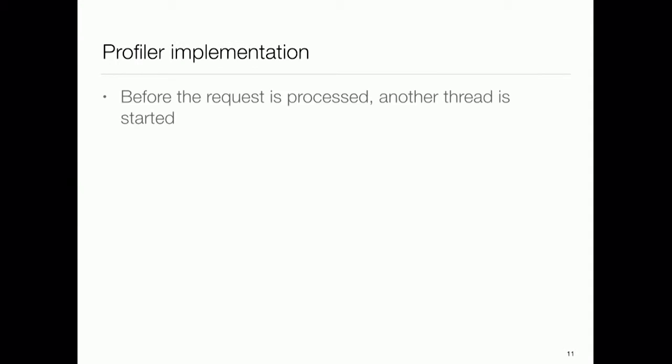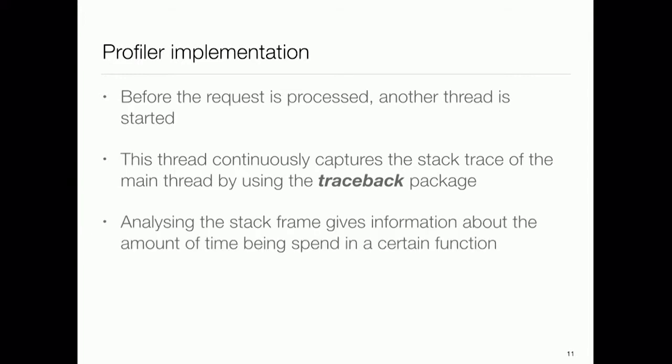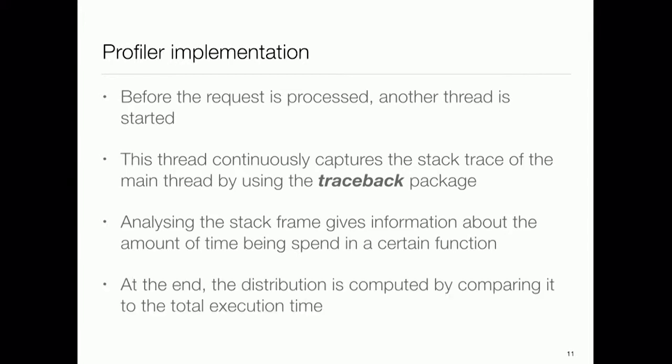To go more specific: before the request is processed, another thread is started. Using the Python traceback package, we continuously capture the stack trace of the main thread. This gives information about the amount of time spent in a certain function. At the end, the distribution is computed by comparing it to the total execution time — if the total is two seconds and half is spent in a certain function, it's easy to make the computation.